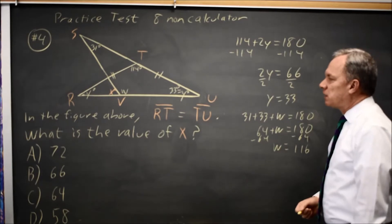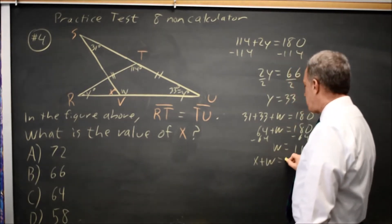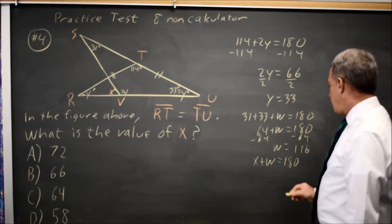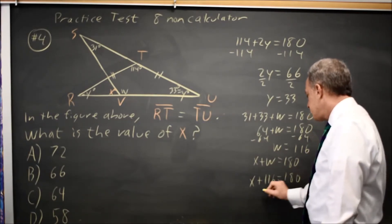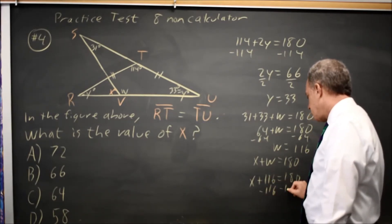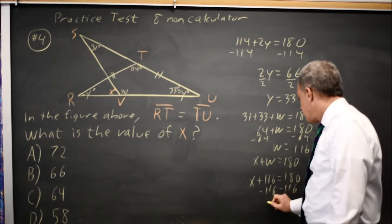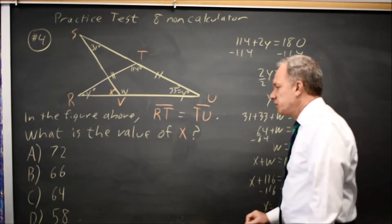I need X. X plus W equals 180 degrees. Subtract 116 from both sides and I get back to the number I had earlier that X equals 64 degrees.